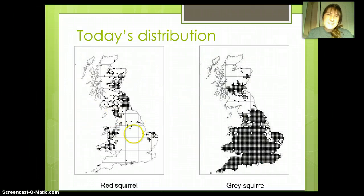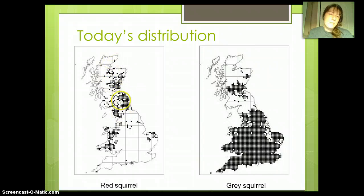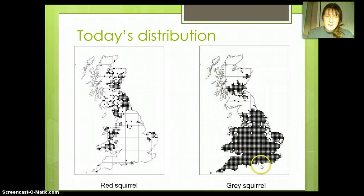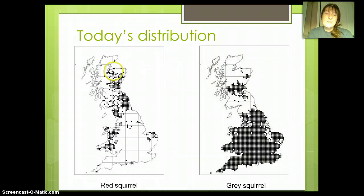Looking at the maps — and this is why I like this example so much — the maps do a really great job of showing it. These dots represent documented populations of the red squirrel, and all the dots over here represent documented populations of the gray squirrel. It's really fascinating how you can see that wherever the gray squirrel is, the red squirrel isn't — meaning competitive exclusion has made it so the red squirrel is not able to exist in those areas.